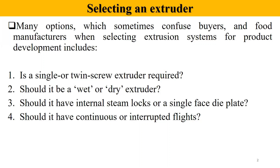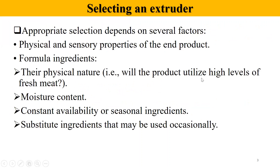The extrusion selection depends on several factors. Number one is the physical and sensory properties of the end product. This is the first and most important criteria when you are going to select the type of an extruder. We want to consider how the end product looks, its organoleptic properties, its flavor, and its texture.